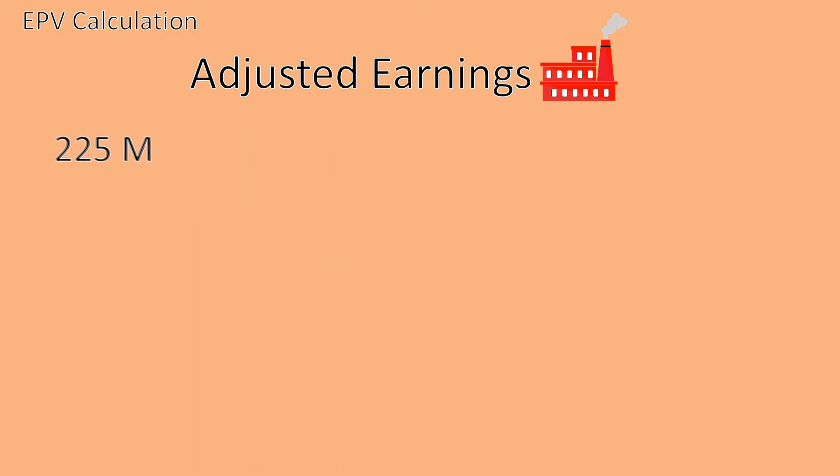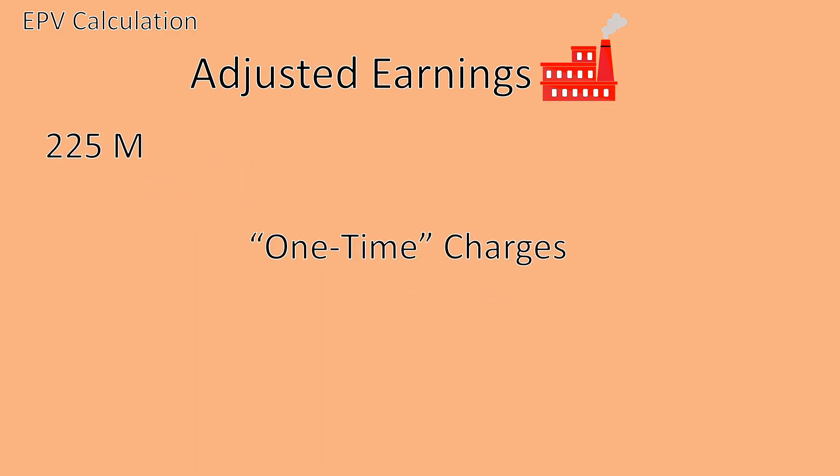In the next step, we take a look at the so-called one-time charges. Those are expenses that technically should only occur once, but in reality a lot of companies record those charges on a somewhat consistent basis. Because of this, we take an average over a certain time period — again, you could use 5 years or one business cycle. In our case, the company records an average of 10 million one-time charges per year.